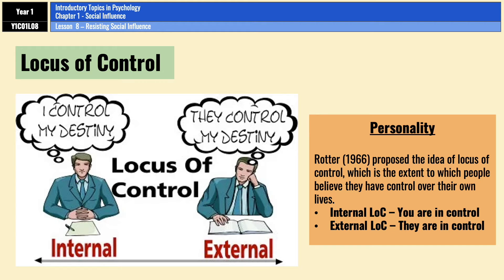The second explanation for resistance to social influence is the locus of control, first proposed by Rotter in 1966. It focuses on how much control people believe they have over the things that happen to them. People with an internal locus of control believe that what happens to them is largely controlled by themselves, whereas people with an external locus of control believe events are beyond their control — guided by fate, luck, the environment, other people, and so on.